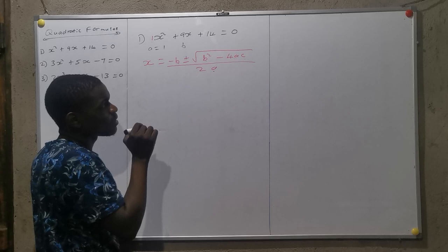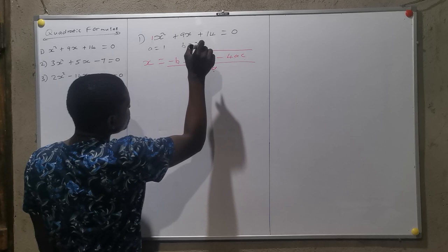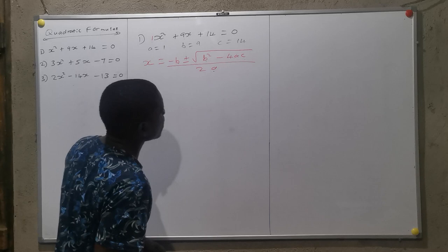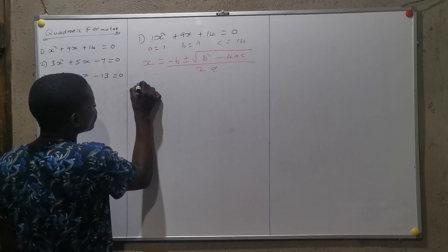Before I start to use my formula, I'm going to identify the values of the constants. I'm going to say A is equal to 1, B is equal to 9 (it's positive), and C is equal to 14.